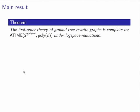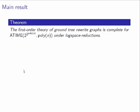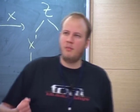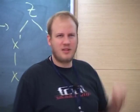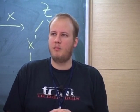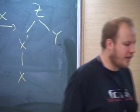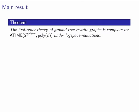Our main result is that the first-order theory of ground tree rewrite graphs is complete for the complexity class ATIME(2^poly(n)) — that is, the set of all problems solvable by an alternating Turing machine running in double-exponential time but whose number of alternations is polynomially bounded. This is a natural complexity class that has complete problems.